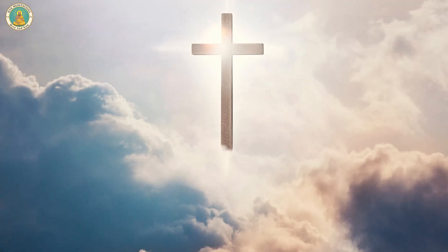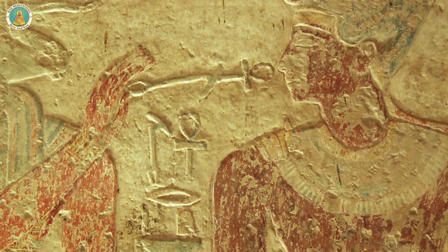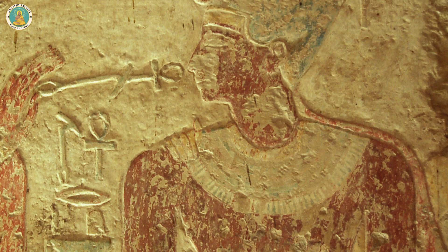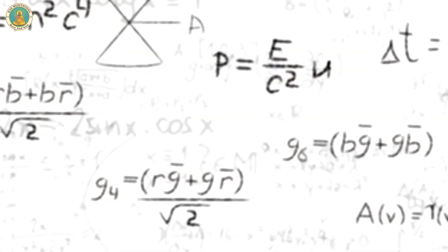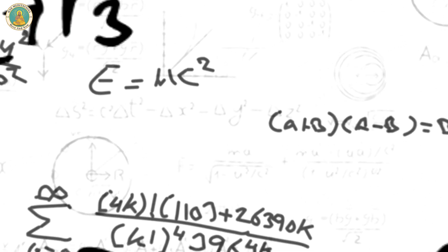Hello guys, today we're talking about symbols. Can symbols be bad? Today we're going to be going over Masonic symbols, religious symbols, and symbols across all civilizations. Because symbols have played a crucial role in human history and continue to be an integral part of our culture to this very day.